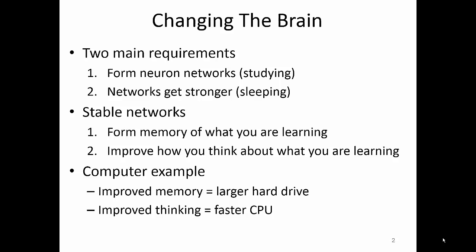In order for you to change your brain, you will need to achieve two main requirements. First, during your waking hours, you need to study in a way that encourages branching of the brain nerve cells called neurons to produce interconnected networks. Then, during sleep, these networks will become stronger if you studied by acting on decisions. This process of converting what you study into stable, long-lasting networks is not restricted just to remembering what you are learning — it also applies to how you think about what you are learning.